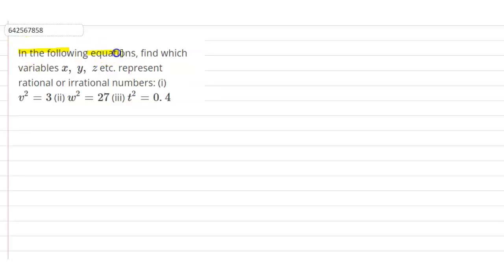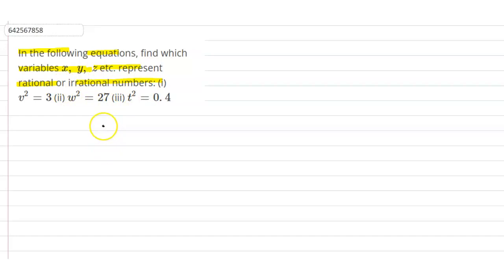The given question is: in the following equations, find which variables x, y, z, etc. represent a rational or irrational number. We have the question in three parts, and in all three parts we have to find which equation represents a rational or irrational number. We will solve them one by one.